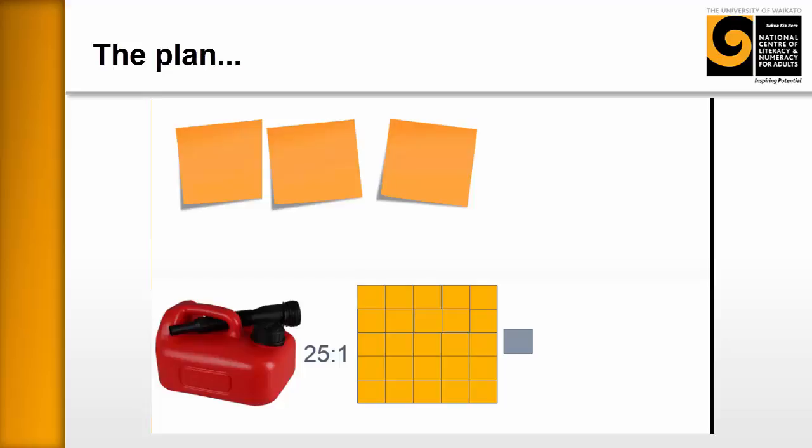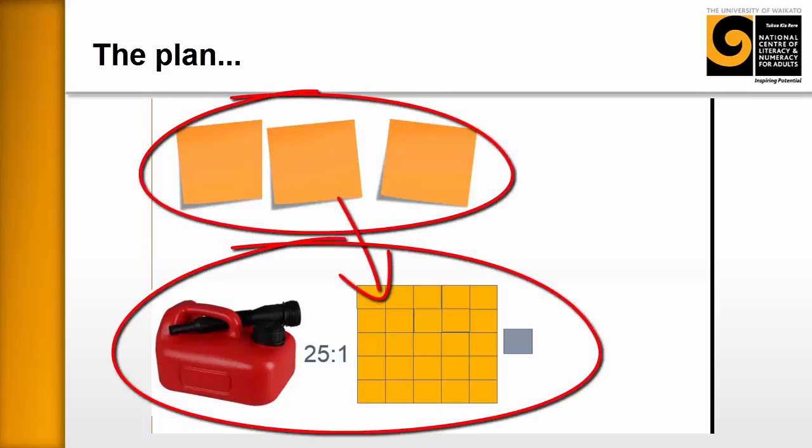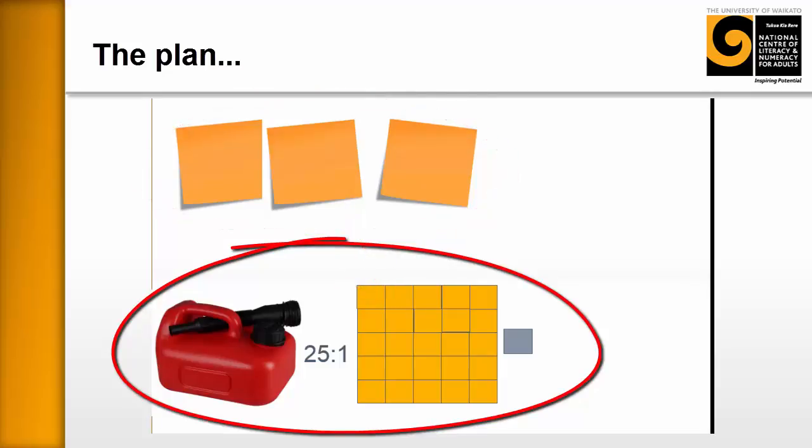The plan is to transition the learners from using the post-its and so on to be able to deal with more complex ratios like mixing petrol and oil mix, putting together ratios for drench or for sprays or whatever it may be at a higher level. So we're really transitioning them from the basic stuff with the post-its and what you're going to see here today, moving them towards the more complex.